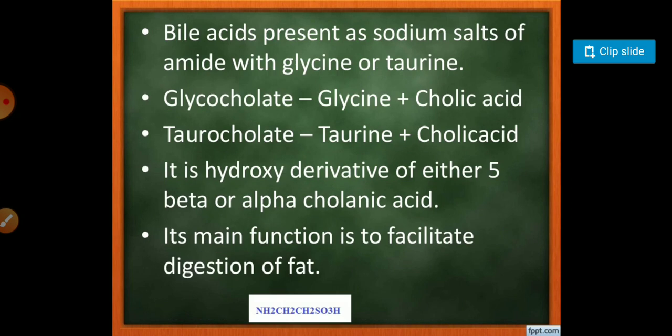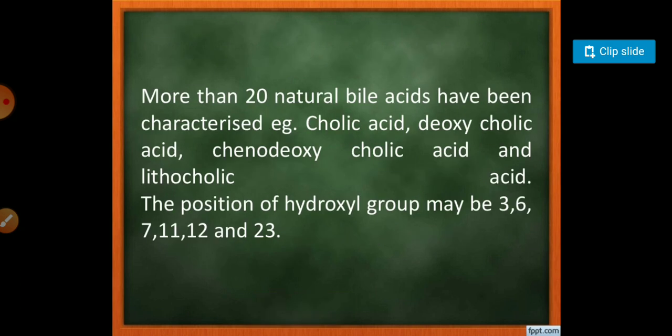The bile acids are present as sodium salts of amides with glycine or taurine. These are hydroxyl derivatives of 5-beta or alpha-cholanic acids and can be used for the digestion of fat. More than 20 natural bile acids have been characterized, such as cholic acid, deoxycholic acid, chenodeoxycholic acid, and lithocholic acid. The position of the hydroxyl group may be 3, 6, 7, 11, 12, and 23.